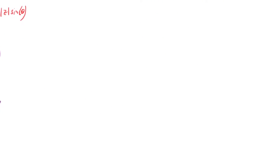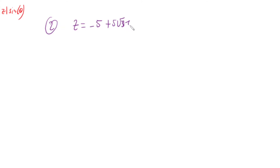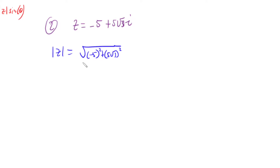My second example is z equals negative 5 plus 5 root 3 i. Doing the same process, we get the magnitude by taking the square root of negative 5 squared plus 5 root 3 squared. Working this out gives us the square root of 100, so our magnitude is 10.